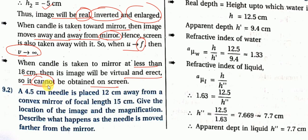So the virtual image cannot be obtained on a screen, because only real images can be obtained on a screen. Virtual images are not obtained on a screen. According to the condition, find the nature of the image — that is the common supplementary question type.